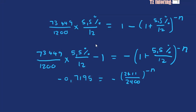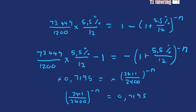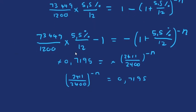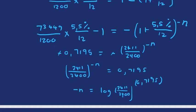The negatives can cancel each other out. We're trying to solve for n, so we can bring that side across. We use a logarithm to simplify: the log carries the base inside the bracket, with the result on the other side, taking us straight to n.